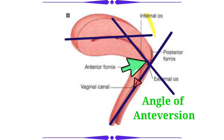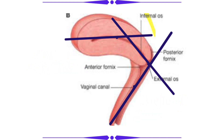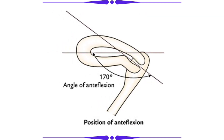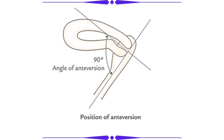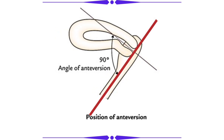These two angles are nothing but the angle of anteflexion and the angle of anteversion. The angle of anteflexion is the angle formed by the axis of the body of the uterus and the cervix — it measures around 170 degrees.